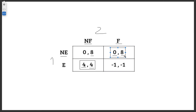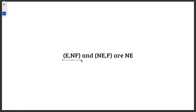So we have two Nash equilibria: Enter and Not to Fight, and Not to Enter and Fight. It is very important to write the Nash equilibria in terms of strategies, as we did here. The best responses for player one and player two are mutual in both cases. Those are the Nash equilibria. Thanks.